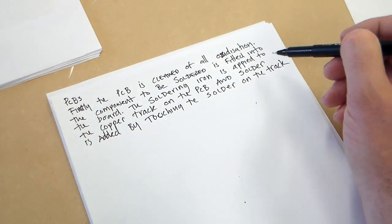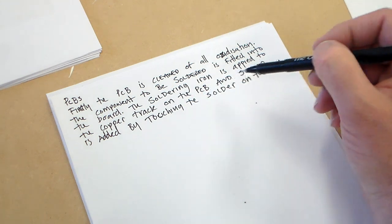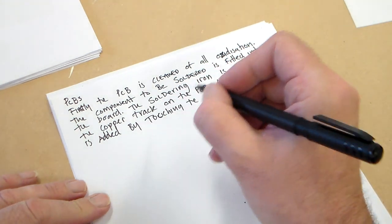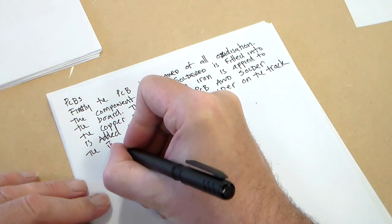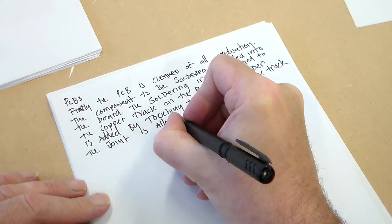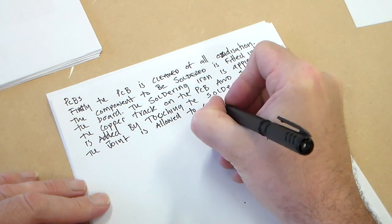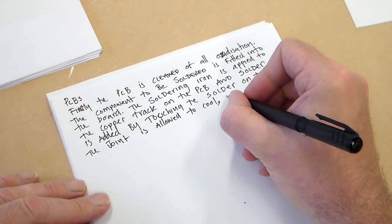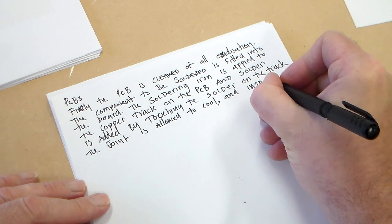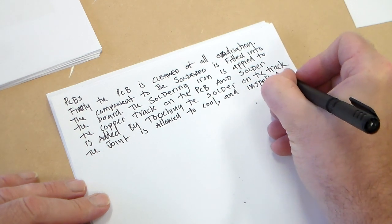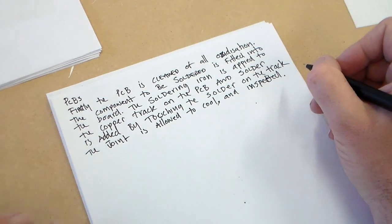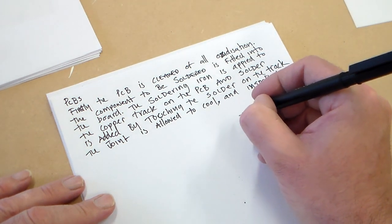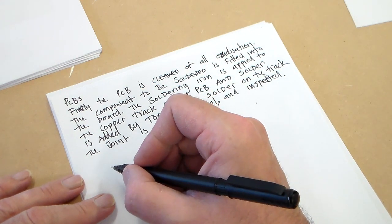The soldering iron is applied to the copper track on the PCB, and solder is added by touching the solder onto the track. The joint is allowed to cool and inspect it. And I think that'll do for that. I think that's the process. I suppose we should say about the suitability.